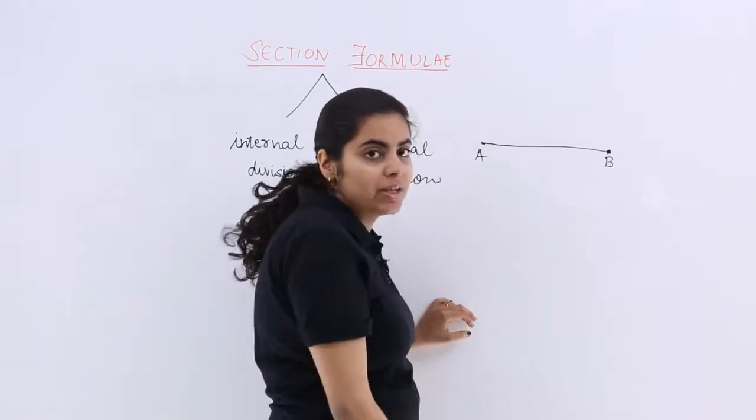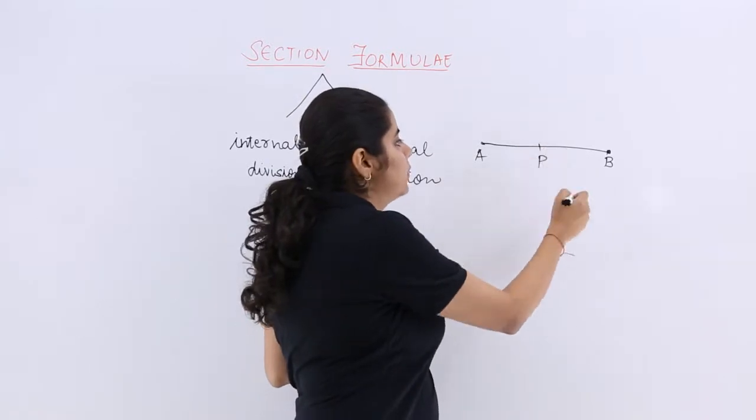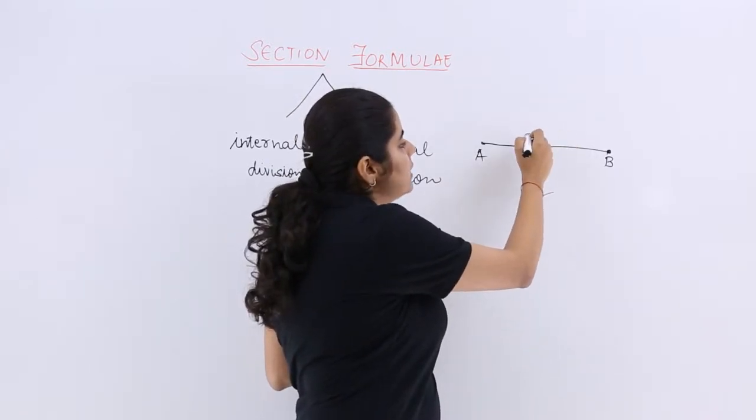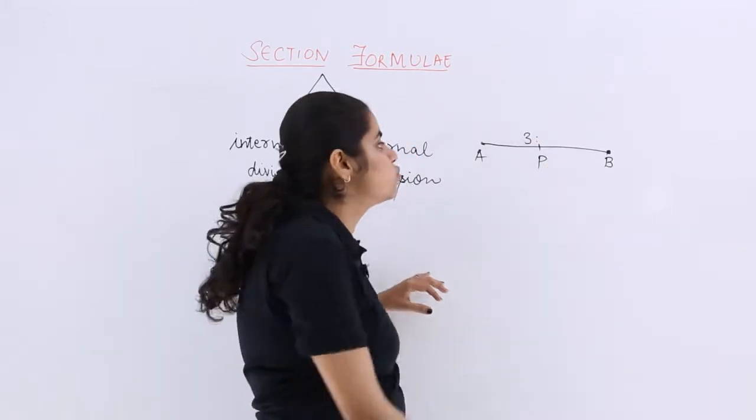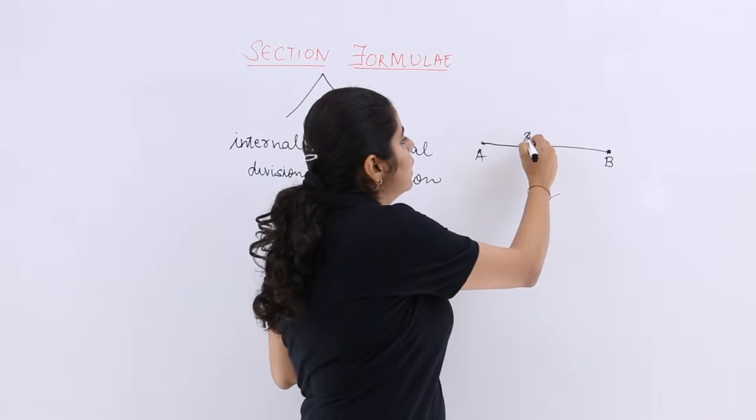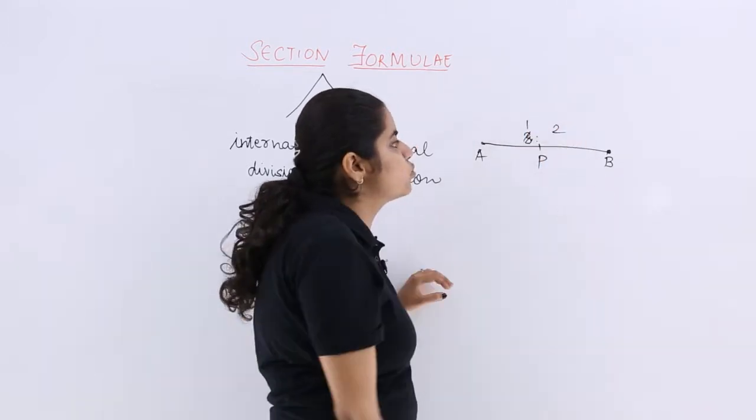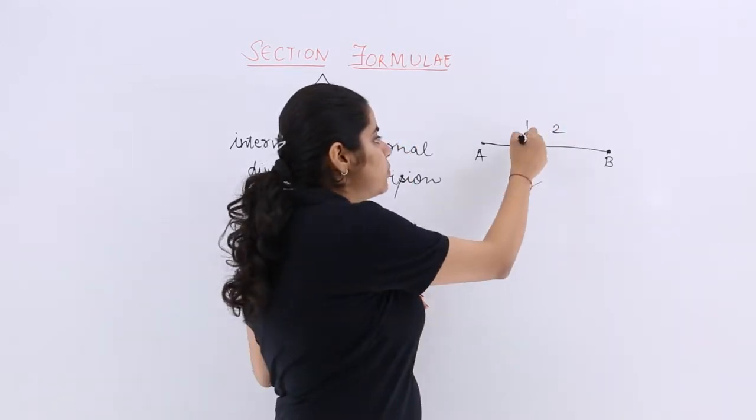Say I have a line segment AB and I have a point P. Now this point P divides the line segment in the ratio, say I must be having certain values to it. It may be, say if I cancel this, 1 is to 2, right. This 1 should be there, it should not be 3.